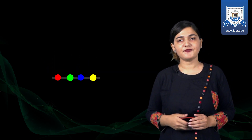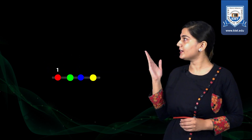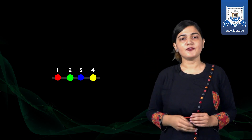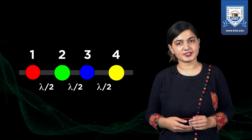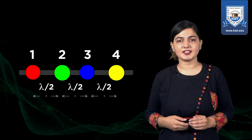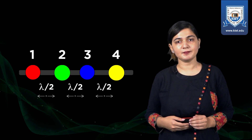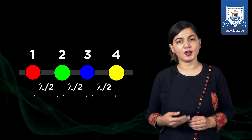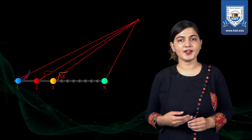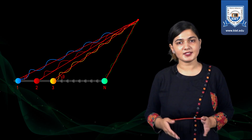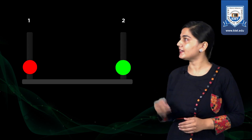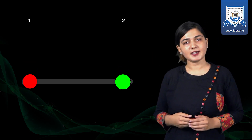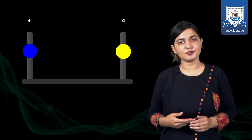So now we have four antennas — antenna 1, 2, 3 and 4 — which are in phase and are separated by lambda/2 distance. The distance between all of them is equal, which is lambda/2, and all are in phase. So when we need to find out the output radiation pattern of this structure, I will look at the radiation pattern of antennas 1 and 2 separately, and antennas 3 and 4 separately.